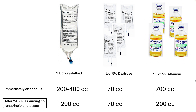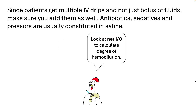One important thing to note is that we are assuming no renal or insensible losses. In real life, you have to account for those as well. Since patients are receiving multiple IV drips — not just fluid boluses — you have to add those as well. Antibiotics, sedatives, and pressors are often constituted in saline. Also, since you lose fluid in urine and stool, you need to look at your net ins and outs rather than just the amount of fluid given.